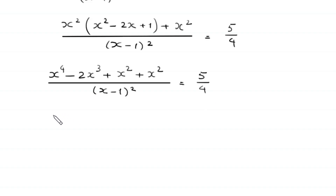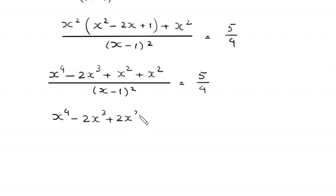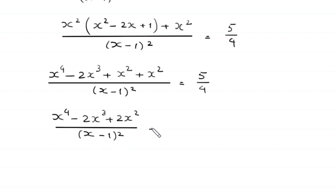Next, expanding: x to the power 4 minus 2x cubed, and the x squared terms (plus 1·x squared plus 1·x squared) combine to give plus 2x squared, all divided by (x minus 1) whole squared, is equal to 5 over 4.